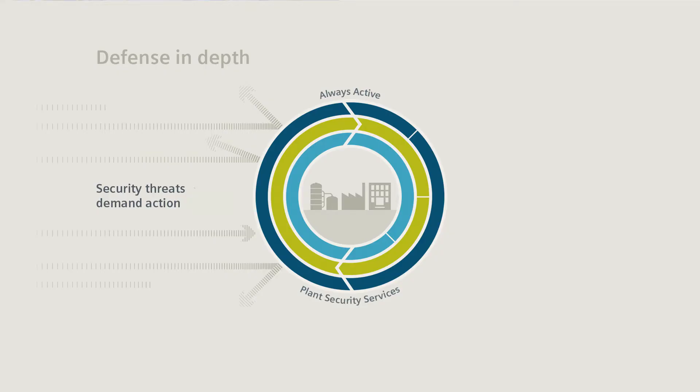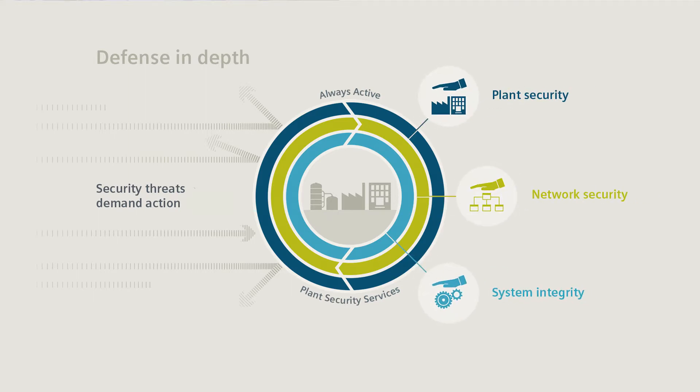The Defense In-Depth Strategy defines concrete measures for enhancing productivity and security at three levels – plant security, network security, and system integrity. We've integrated security functions directly into the TIA Portal specifically for the areas of network security and system integrity. Thomas, what are the most important functions or examples on how to ensure system integrity?